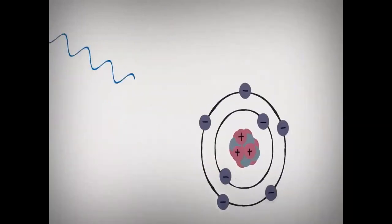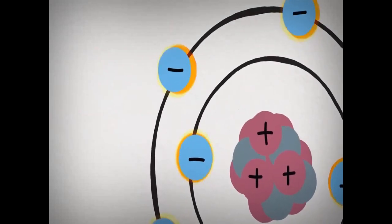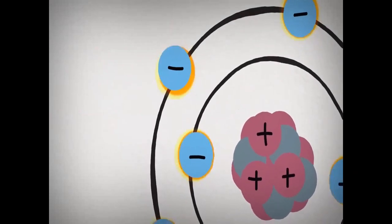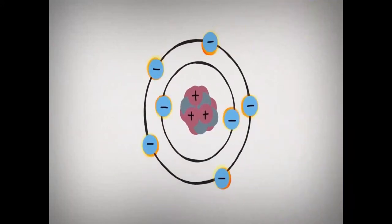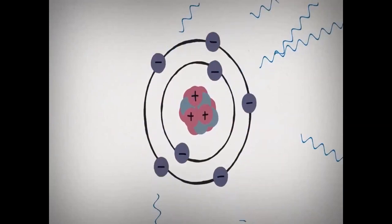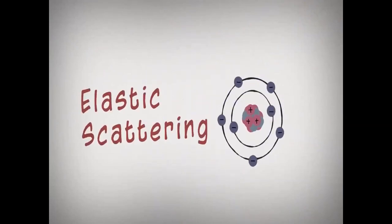When an X-ray encounters an atom, its energy is absorbed by the electrons. Electrons occupy special energy states around an atom. Since this is not enough energy for the electron to be released, the energy must be re-emitted in the form of a new X-ray with the same energy as the original. This process is called elastic scattering.